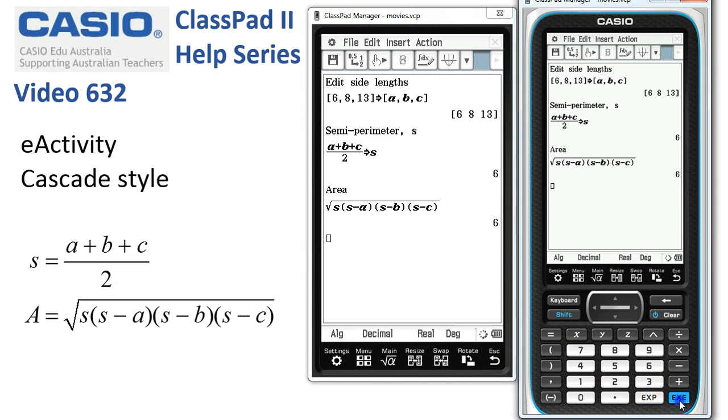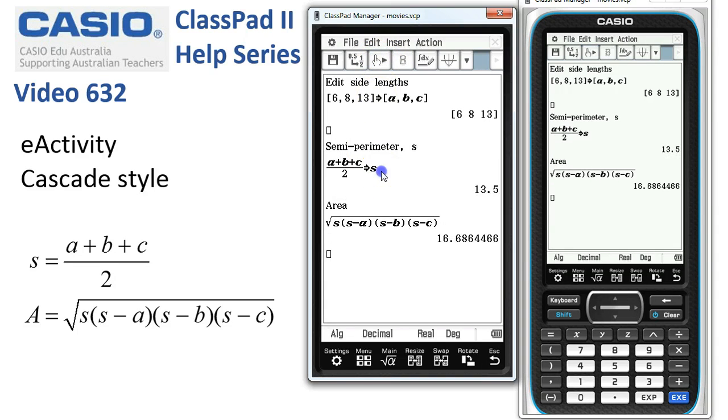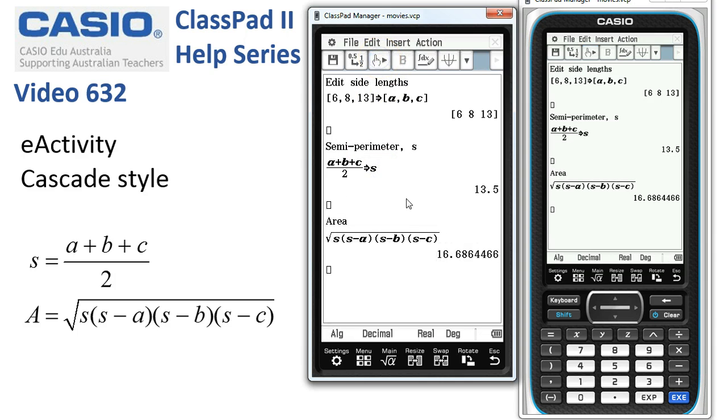When I tap Execute, instant updating. That's the cascading part of it. We make a change up here and the semi-perimeter is recalculated and so is the area. If you want to go a little bit slower, we can use this option, which just means recalculate one line at a time. We can come to here and just do that line and onto this formula and do that line. ClassPad updates as we go along.